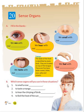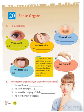Now come to part B. We have to tell which sense organ we use in different situations. Which sense organ do we use to smell? Our nose. To taste a mango? Our tongue. To hear the chirping of birds? Our ears. To feel the heat of the sun? Our skin.